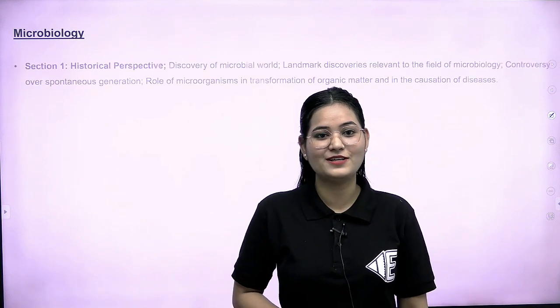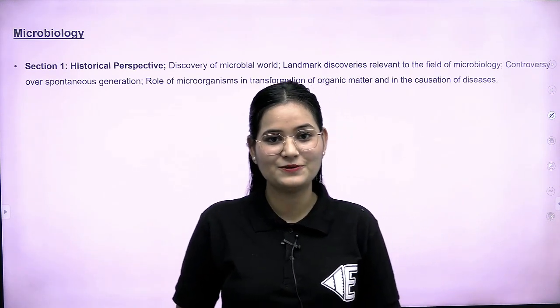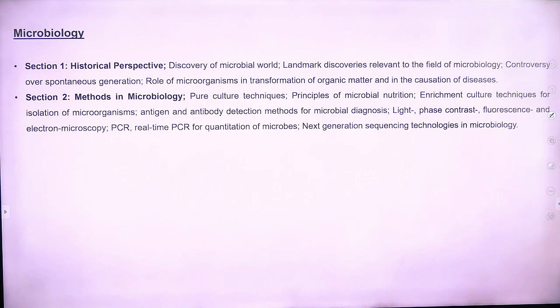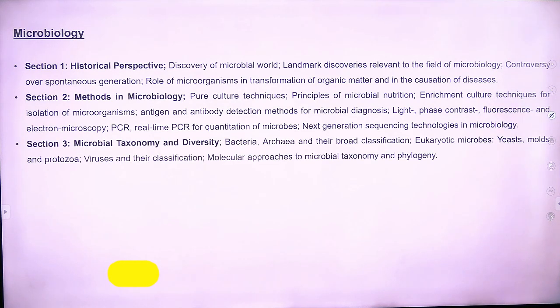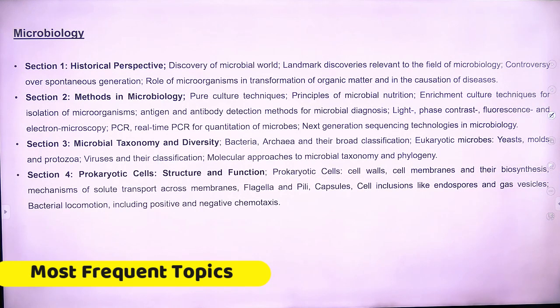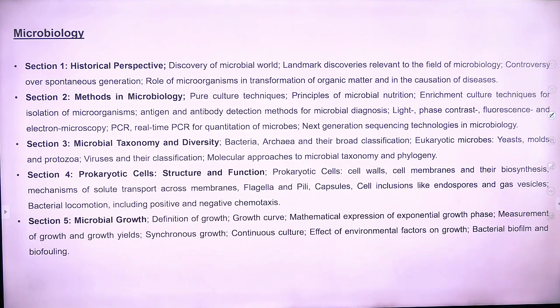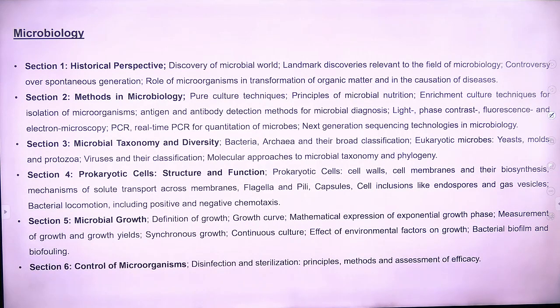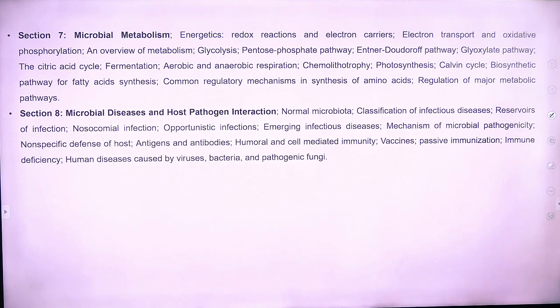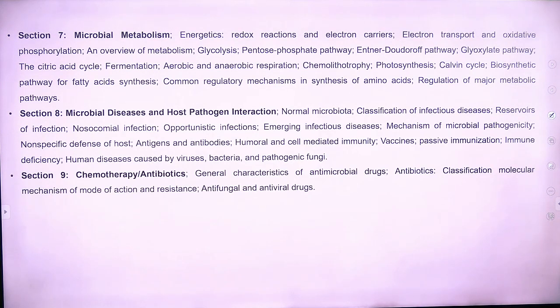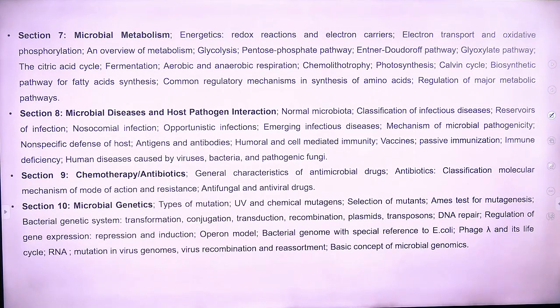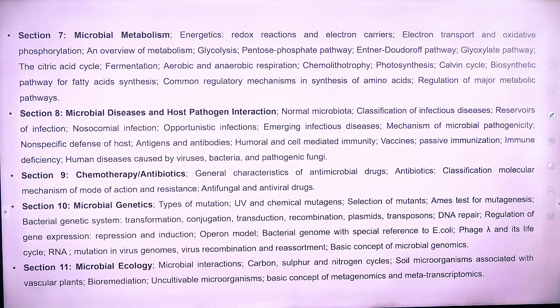First, we will look at the syllabus. There are 11 sections in microbiology. The first section is historical perspective, second is methods in microbiology, third is microbial taxonomy and diversity, fourth is prokaryotic cell structure and function, fifth is microbial growth, and sixth is control of microorganism. The seventh section is microbial metabolism, eighth is microbial disease and host-pathogen interaction, ninth is chemotherapy and antibiotics, tenth is microbial genetics, and eleventh is microbial ecology.